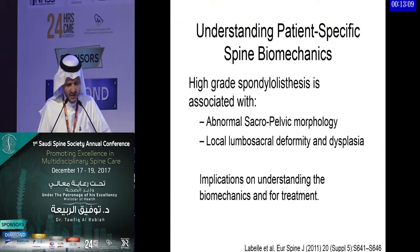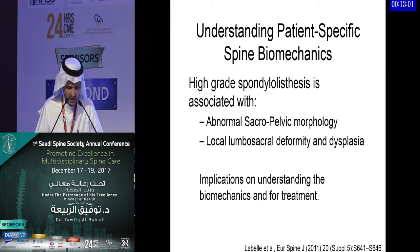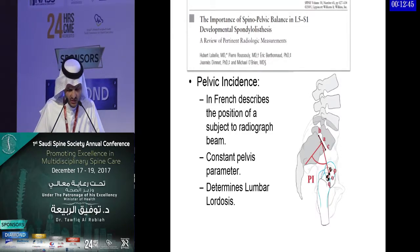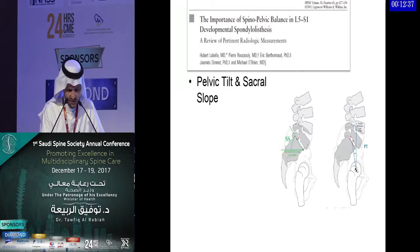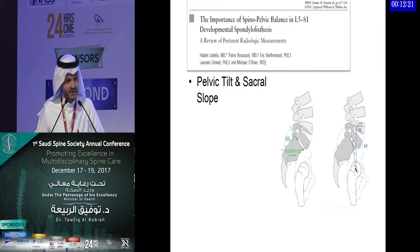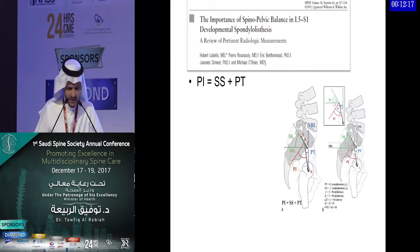Since the 1980s, it has been observed that high-grade spondylolisthesis is associated with abnormal sacropelvic morphology, local lumbosacral deformity, and dysplasia, with implications for understanding biomechanics and treatment. To review: pelvic incidence is measured from the middle of the end plate of the sacrum on a perpendicular line to the middle of the femoral head. Pelvic tilt and sacral slope then follow. Pelvic incidence is not variable with patient position — it is an inherent character of the pelvis — while pelvic tilt and sacral slope vary depending on position. Geometrically, pelvic incidence equals sacral slope plus pelvic tilt.